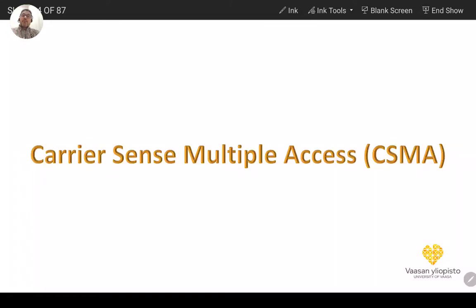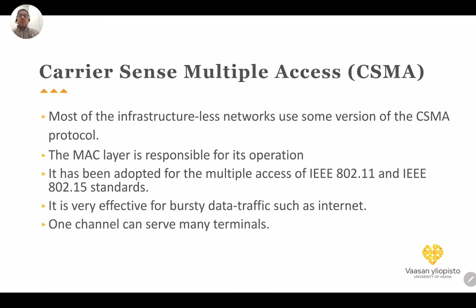Welcome to clip 2 in part 6, where we continue talking about technologies. We make a fast review about Carrier Sense Multiple Access protocol. Most infrastructureless networks use some version of CSMA. The MAC layer is responsible for its operation. It has been adopted for multiple access in IEEE 802.11 Wi-Fi and IEEE 802.15 standards. It is very effective for bursty data traffic such as on the internet, and one channel in CSMA can serve many terminals.